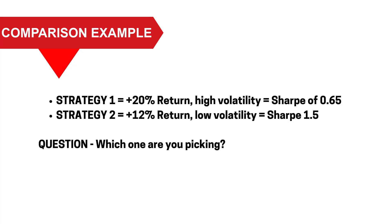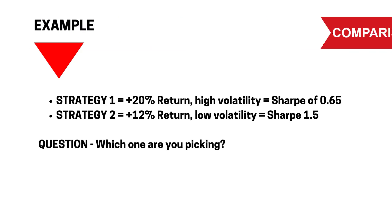Here's an example to really cement the idea. We've got two strategies. Strategy one: 20% return, high volatility, Sharpe 0.65. Strategy two: a lower return of only 12%, but low volatility — that swing, that deviation from the mean is much smaller, so further away from that mean gives a lower Sharpe. Which one are you picking? If you're a pro trader or a hedge fund expert, you're going for Strategy 2 every time. Yes, the return is lower, but over the long term the P&L is much more stable and predictable.